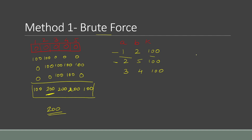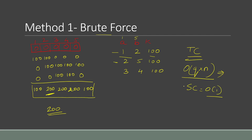Let's see the time complexity of the brute force approach. If there are q queries, for every query we may need to traverse the whole array of size n. So its maximum time complexity is O(q × n), which is quadratic time. That is why we need another approach to reduce this. The space complexity is O(1) because we haven't taken any extra space.